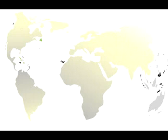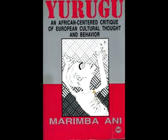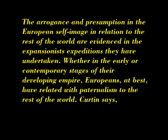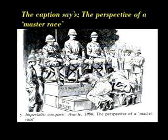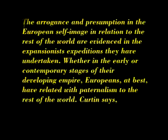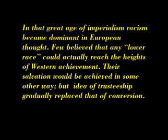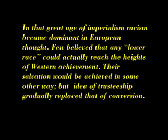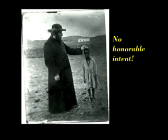This aspect of European cultural personality is examined by Marimba Ani in chapter 4 of her book Urugu: An African-Centered Critique of European Culture, Thought, and Behavior, in which she says: 'The arrogance and presumption in the European self-image in relation to the rest of the world are evidenced in the expansionist expeditions they have undertaken. Europeans at best have related with paternalism to the rest of the world.' Curtin says that in that great age of imperialism, racism became dominant in European thought — few believed any lower races could reach the heights of Western achievements, and they were entitled in their inferiority to the paternal protection of a Western power.